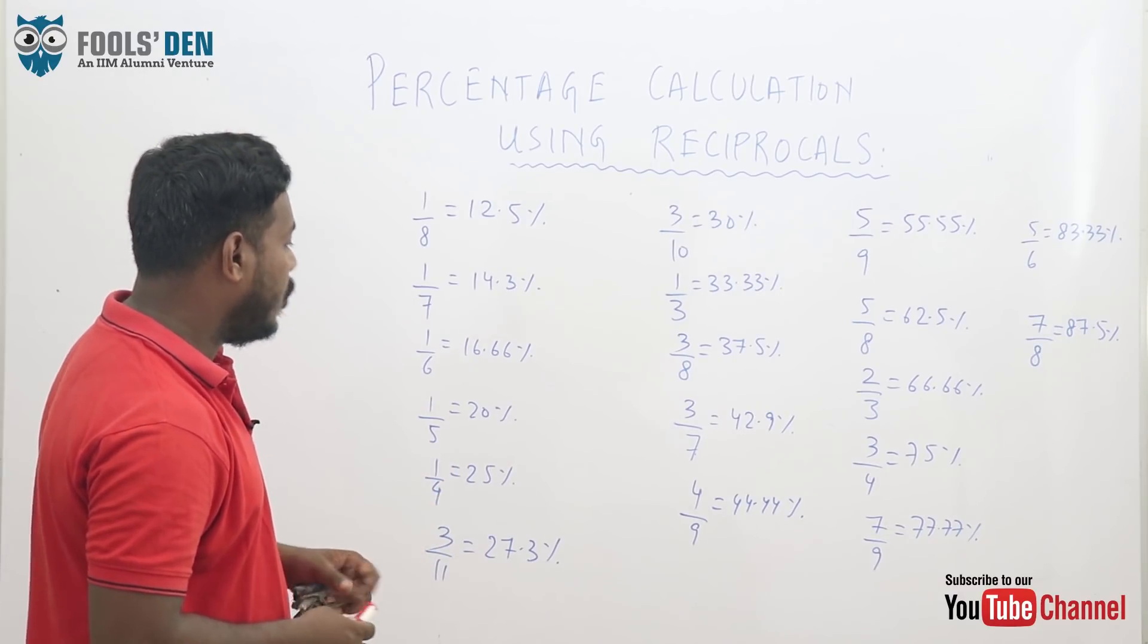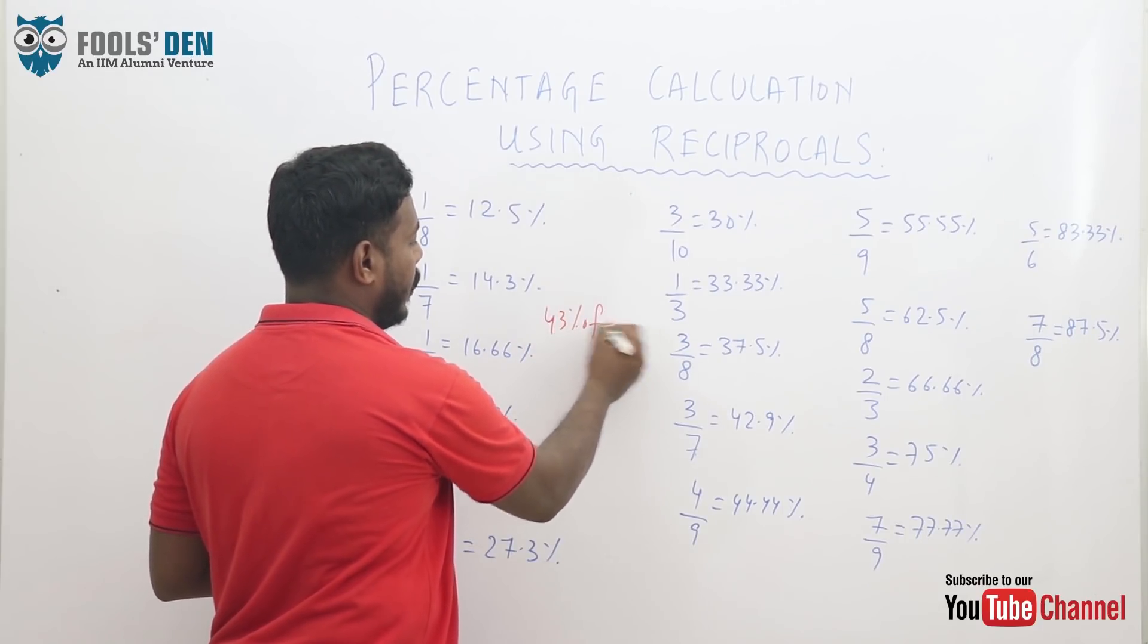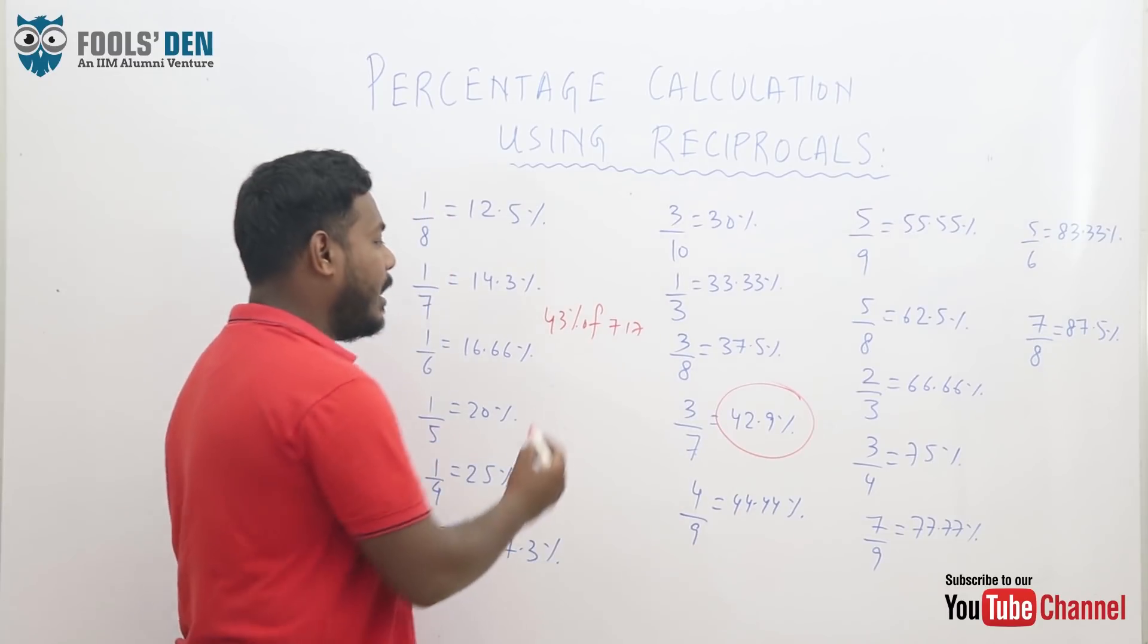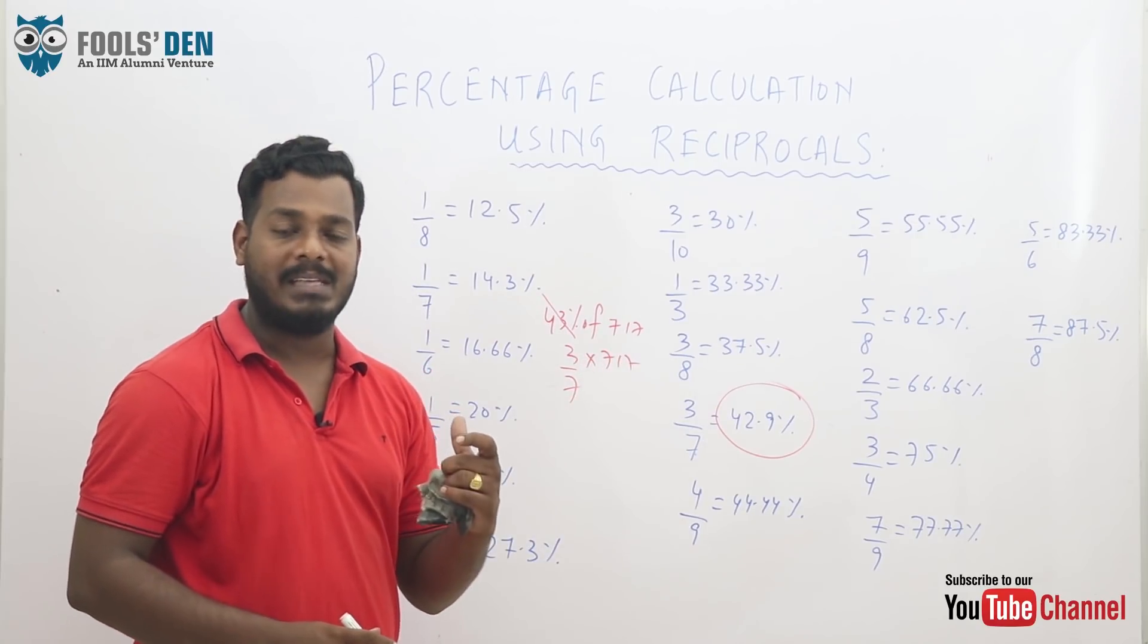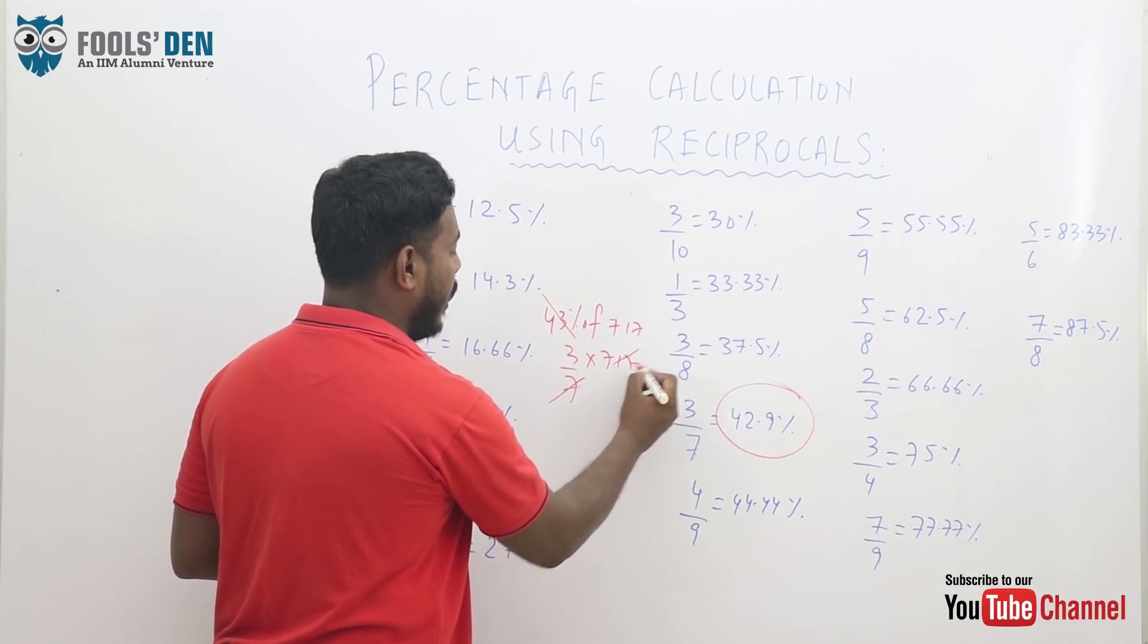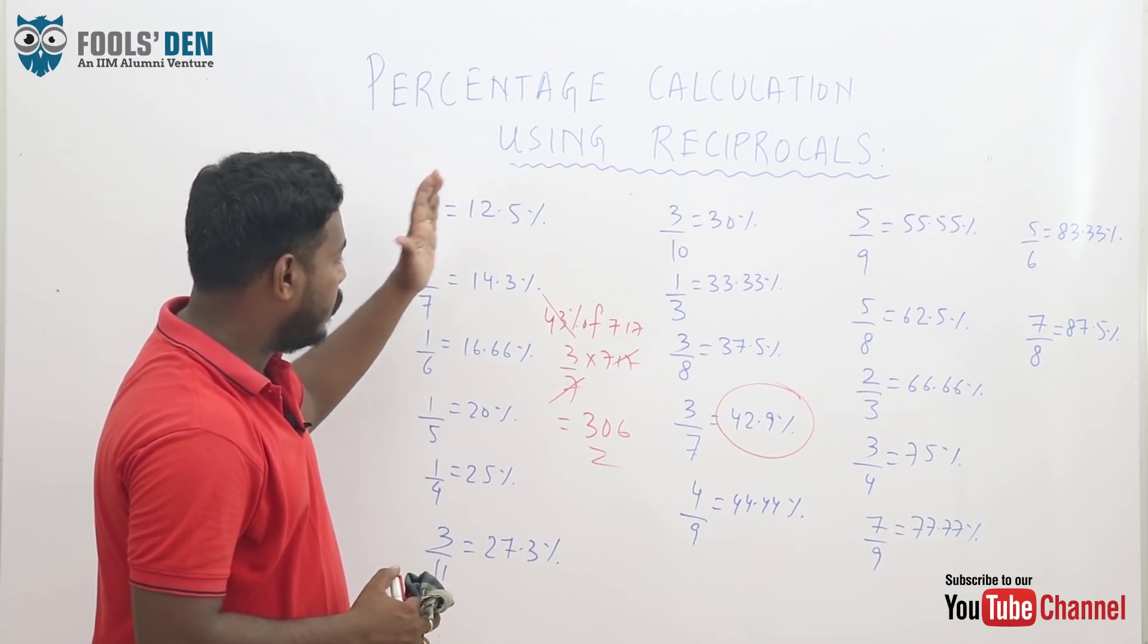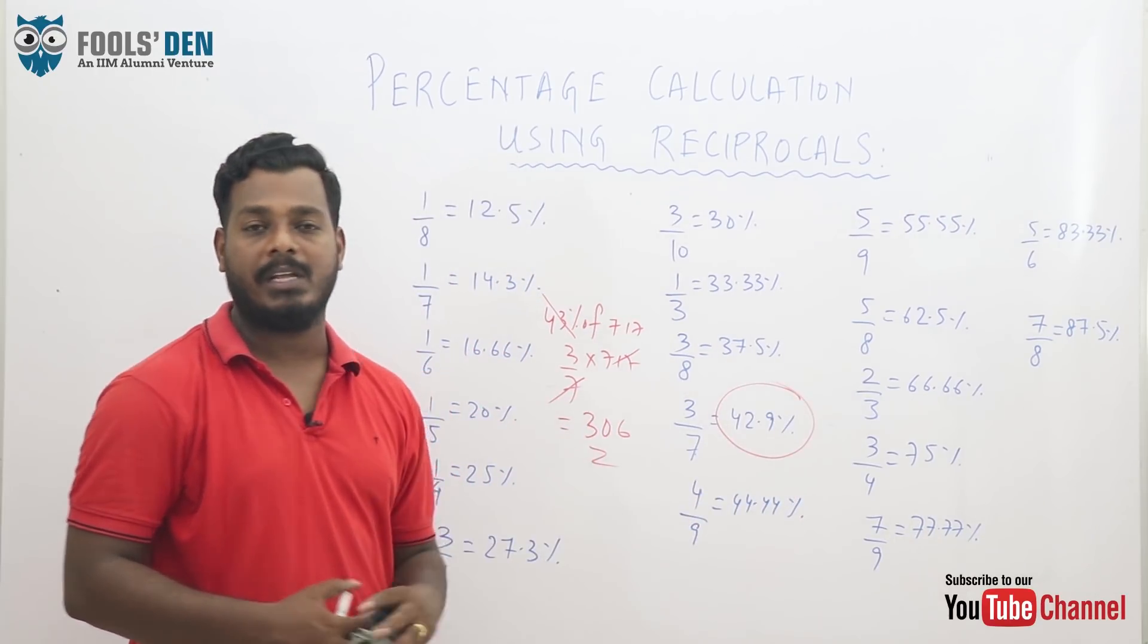Suppose if you need to calculate 43% of some number 717, and you remember that 42.9% is 3 by 7. Can we approximate this to 3 by 7 of 717? Now that makes the calculation really easy. 717 by 7 would be approximately 102. 102 into 3 is 306, approximately. So this way, see, here almost the range from 10 to 100 is covered. Whatever percentage you need to calculate, you use its nearest reciprocal and calculate the percentage.